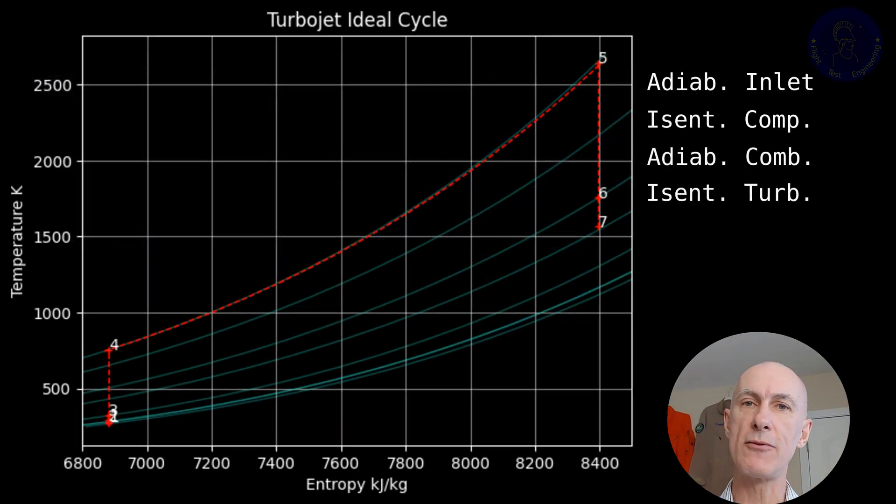Don't worry, we'll get to the code later. Let's focus on the thermodynamics for now. We have entropy on the x-axis and temperature on the y-axis, with constant pressure lines shown in bluish and then the thermodynamic cycle shown in red.